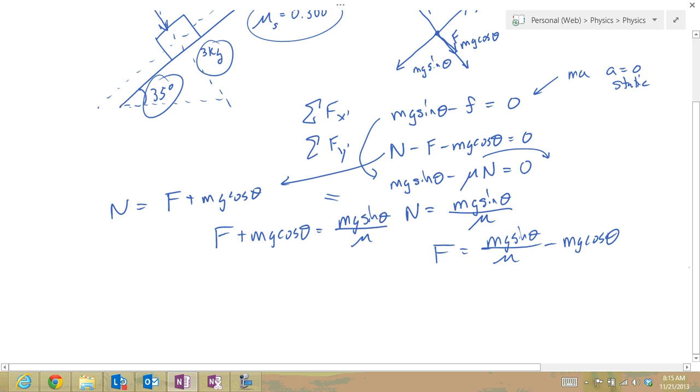So I can solve for that. F equals 3 kilograms times 9.8 times sine of 35 degrees, all divided by 0.300 minus 3 kilograms times 9.8 meters per second squared, times cosine of 35 degrees. I can now solve for that.